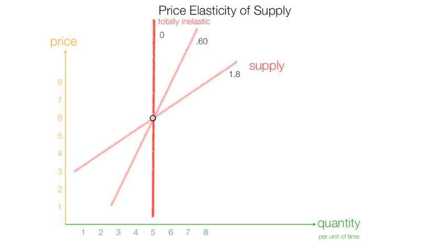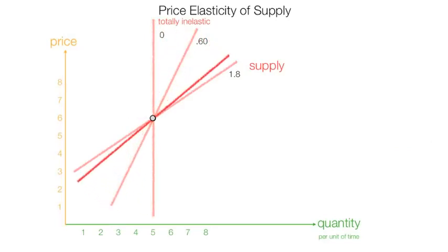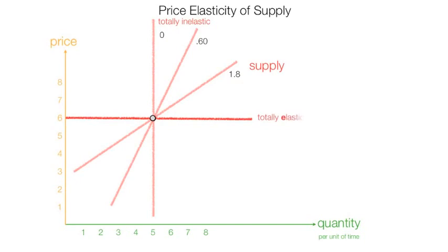What happens if supply is horizontal or flat? Totally elastic. In this case, elasticity is infinite. It can't really be calculated — it is gigantic, enormous.